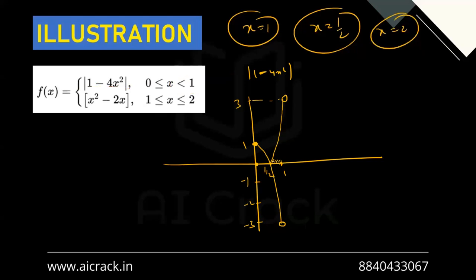From the graph we can clearly see that at x = 1/2, the function is not differentiable because there is a sharp edge at that point.